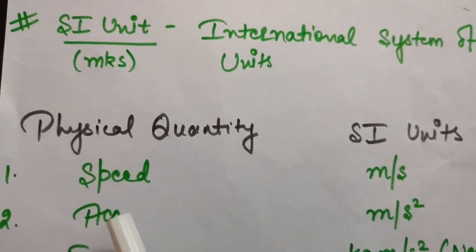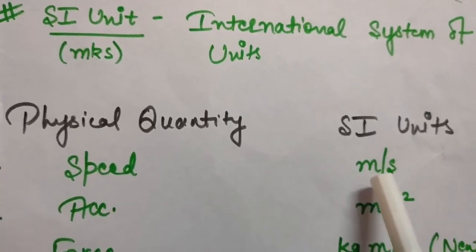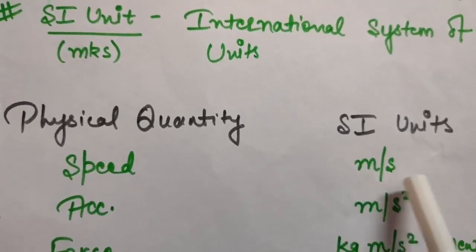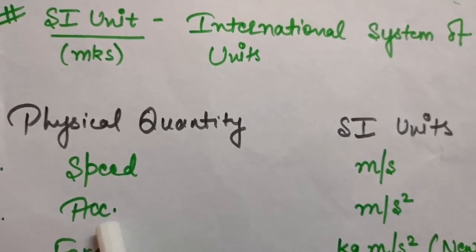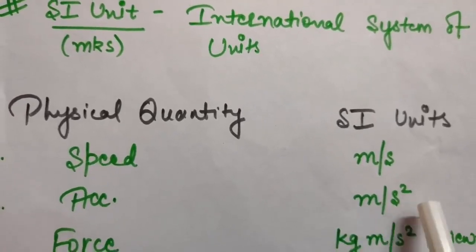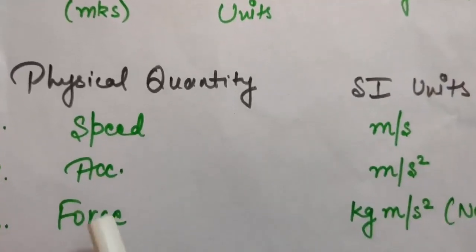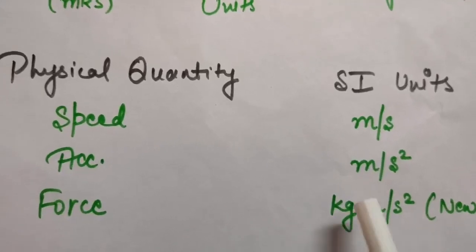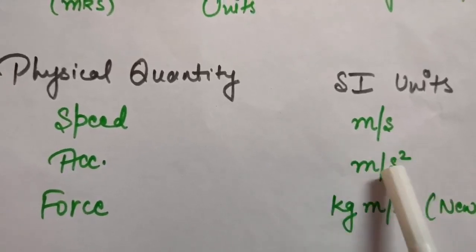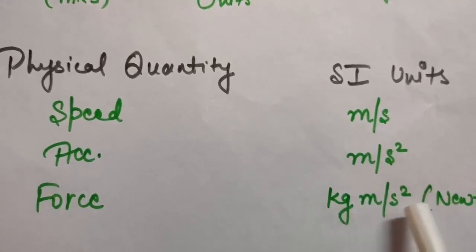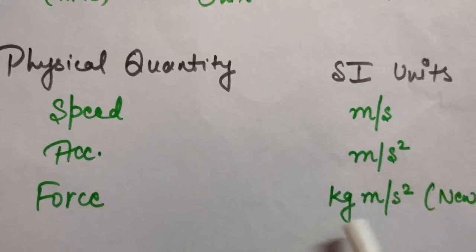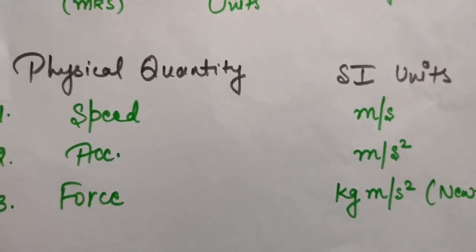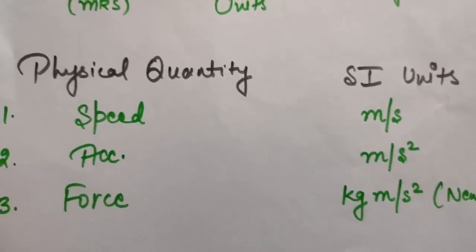Similarly for acceleration, the formula is speed upon time. Speed is meter per second, and dividing by time gives meter per second squared. So the SI unit or MKS unit of acceleration is meter per second squared. For force, you know force is defined as MA — mass into acceleration. Mass is in kilograms and acceleration is meter per second squared. So the SI unit of force is kilogram meter per second squared, and this unit is also termed as Newton. So Newton is the SI unit of force, and we can say the MKS system is nothing but the SI unit system.